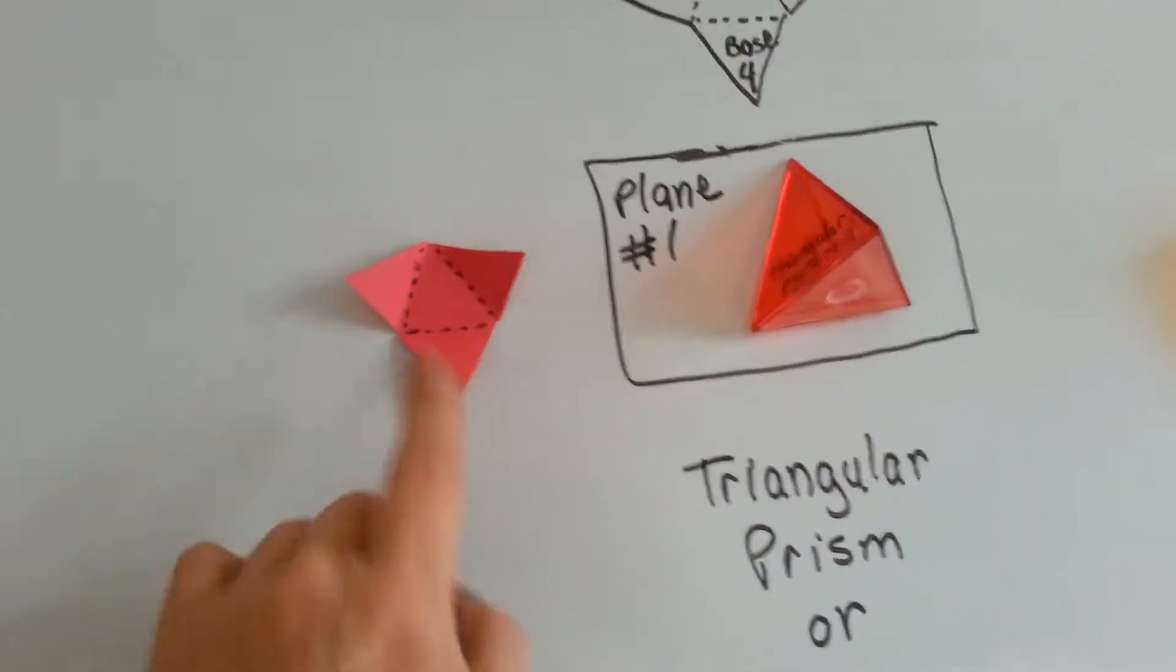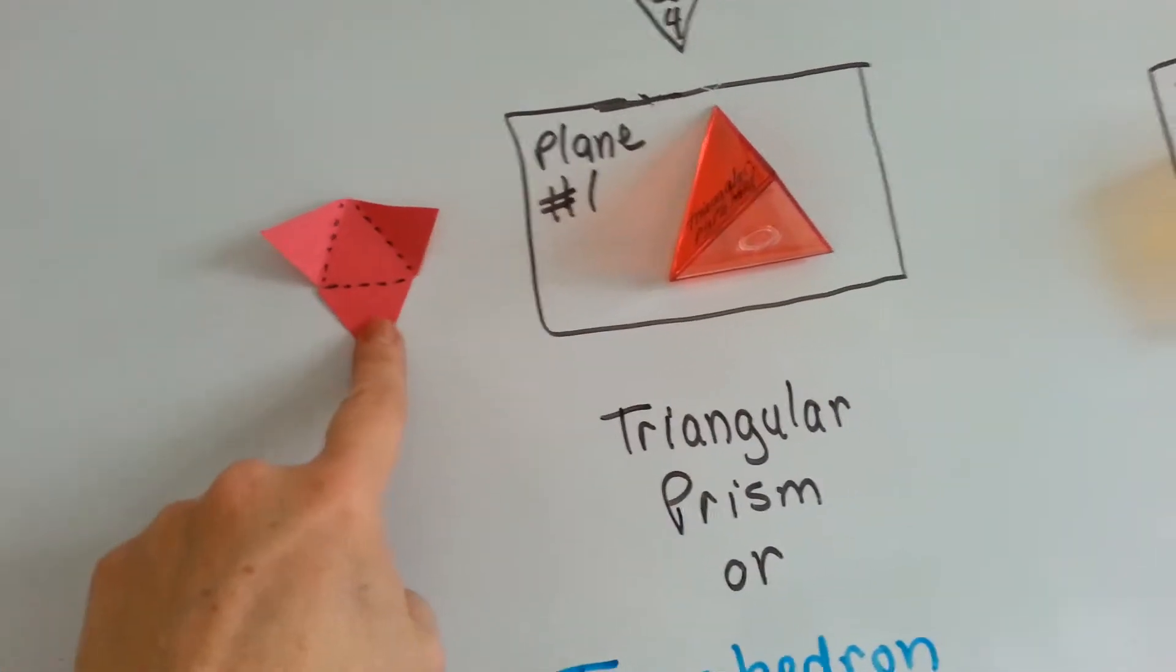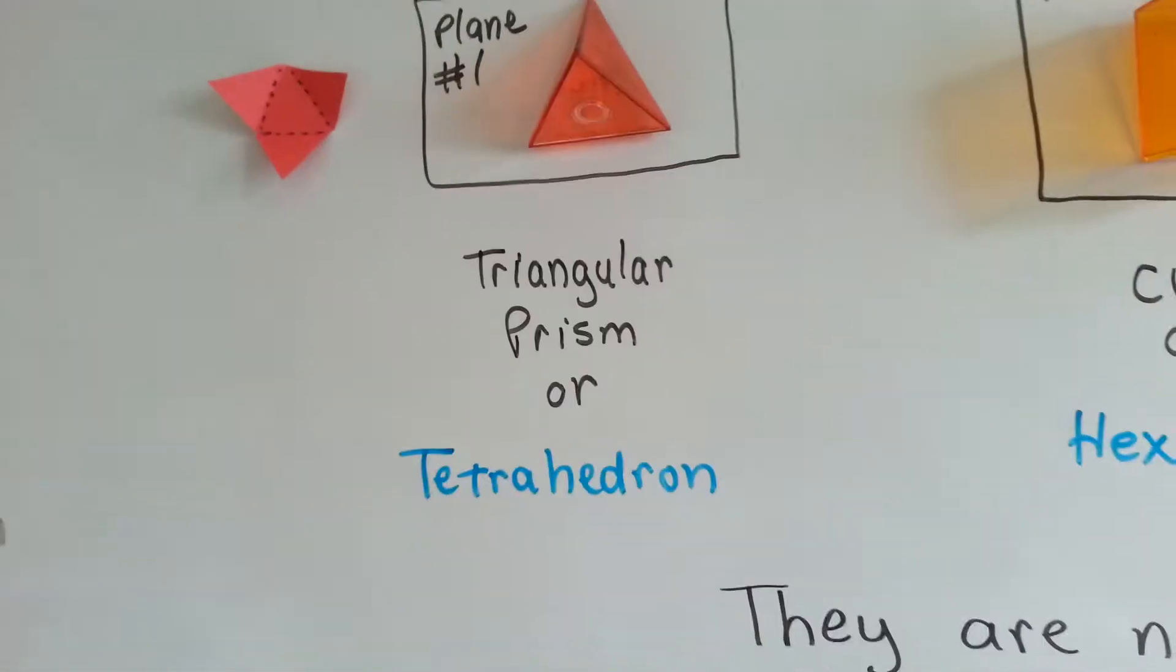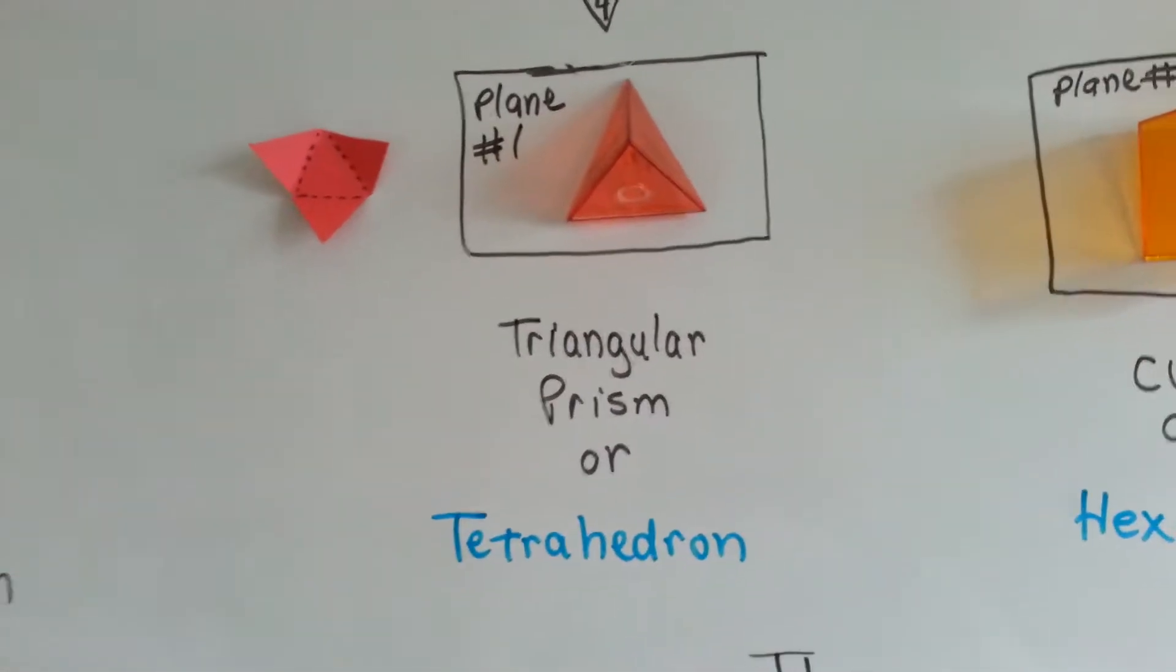Just like this. So when it's opened up, you can see that there would have been four planes. That's a tetrahedron. It's a triangular prism, alright?